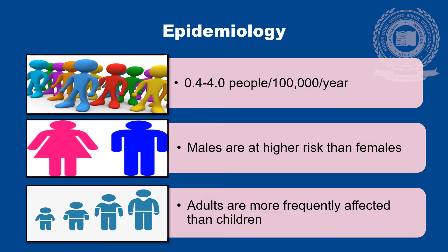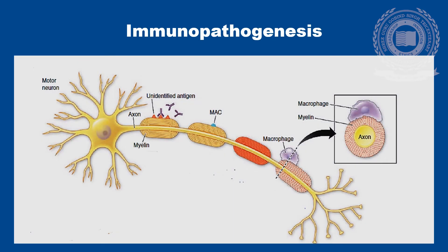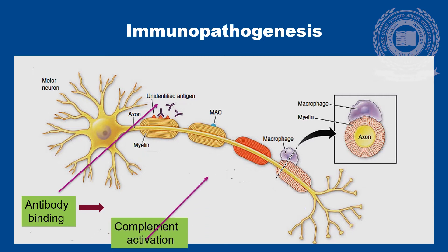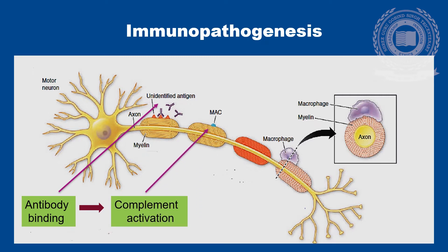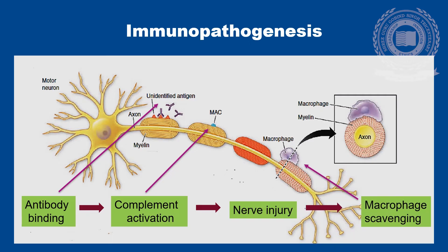It affects population in all age groups, but adults are more frequently affected than children. Although causal antigens have yet to be unequivocally identified, autoantibodies may bind to myelin antigens, and this process leads to activation of complement. This is followed by formation of membrane attack complex on the outer surface of Schwann cells, and the initiation of vesicular degeneration, which leads to nerve injury. Macrophages subsequently invade myelin and act as scavengers to remove myelin debris.